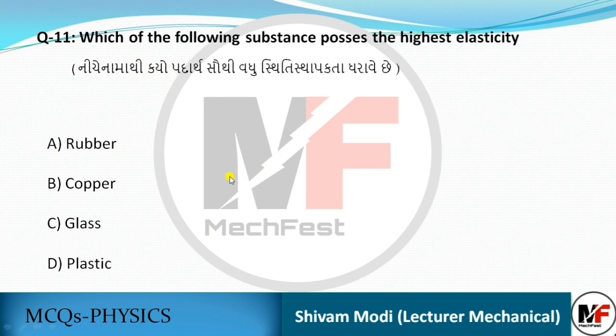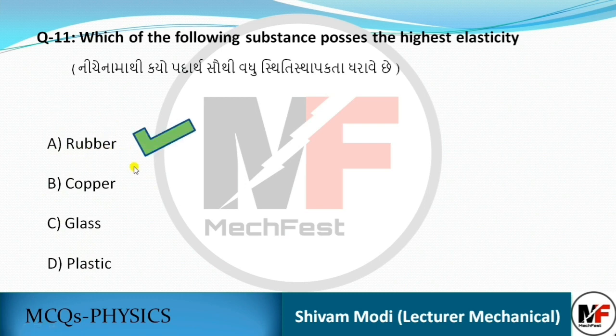Which of the following substances possesses the highest elasticity? The options are rubber, copper, glass, and plastic. We know that the most elastic material is steel — but among the given options, the answer is rubber.